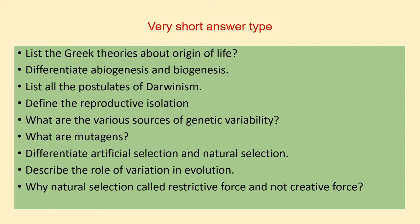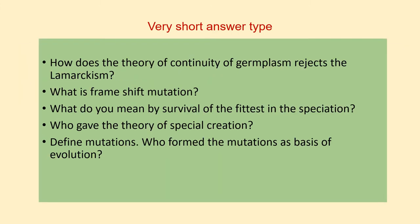Next: differentiate artificial selection and natural selection — again, write two or three differences. Next: describe the role of variation in evolution. Next question: why is natural selection called a restrictive force and not a creative force? Next question: how does the theory of continuity of germplasm reject Lamarckism?